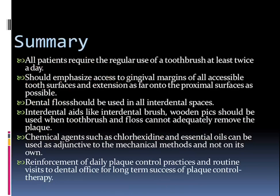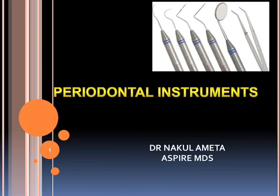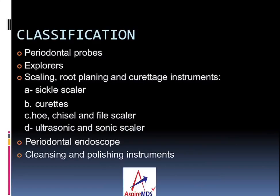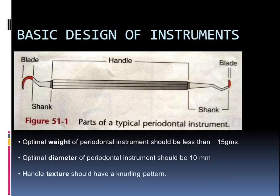Reinforcement of daily plaque control practices and routine visits to the dental office for the longer term is a reason for success of plaque control therapy. Now let's talk about periodontal instrumentation. Since ancient times, periodontal treatment instruments have been used for plaque control as well as for various surgical uses. They are instruments designed to remove calculus, for root planing, curettage of the gingiva, and removal of diseased tissue. They can be broadly classified as periodontal probes, explorers, diagnostic instruments, scaling/root planing/curettage instruments, preventive endoscopes, and cleansing and polishing instruments.